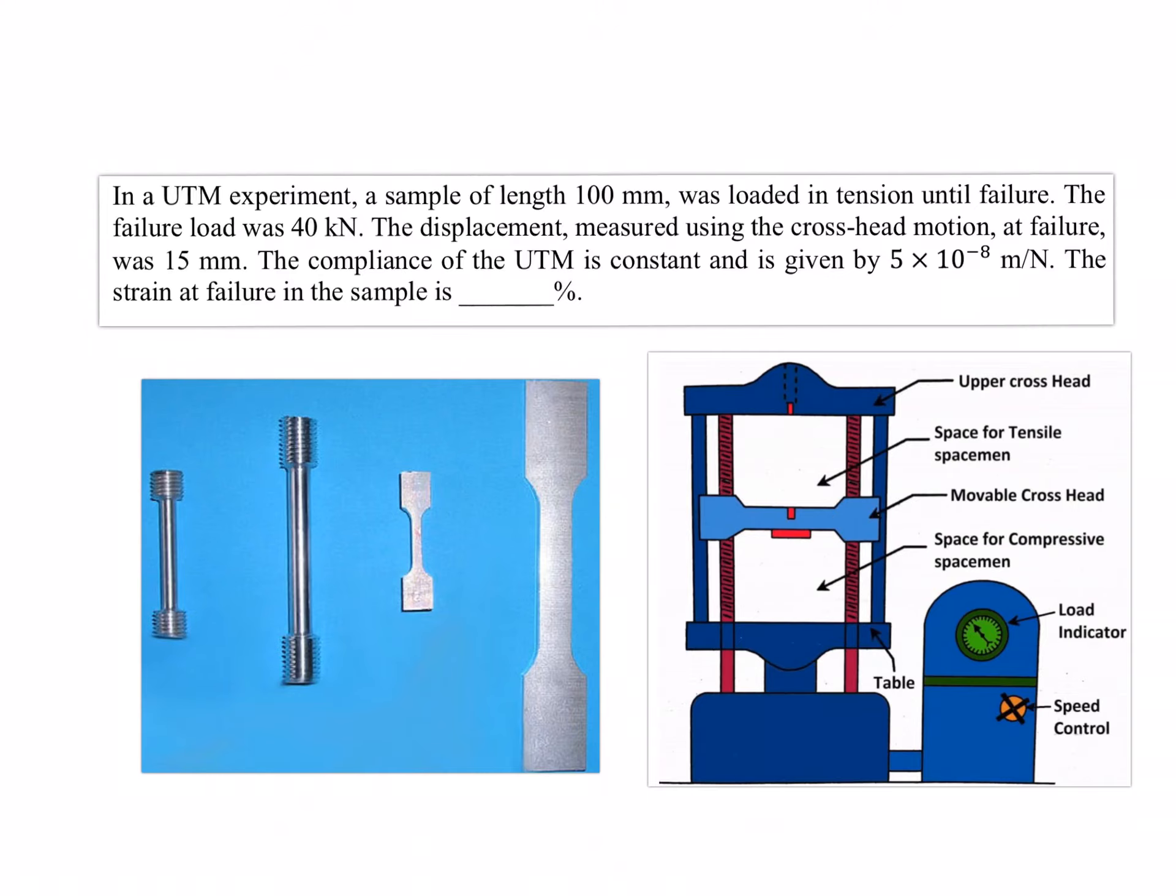If it's a compression test it has to go up, and if it's a tension test it has to come down. Sounds simple right? But in this problem we have a universal testing machine, we have a sample whose length is 100 mm and it was loaded in tension until failure. The failure load is given as 40 kN.